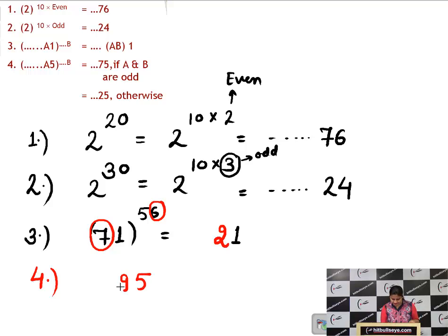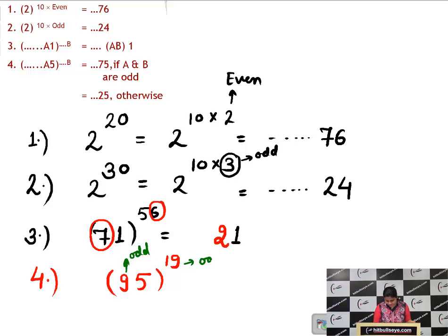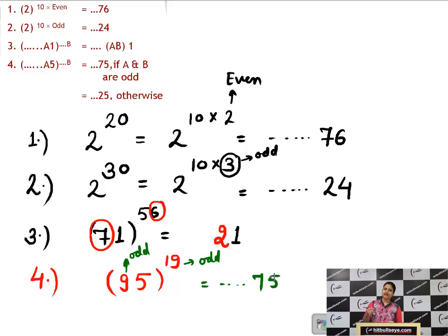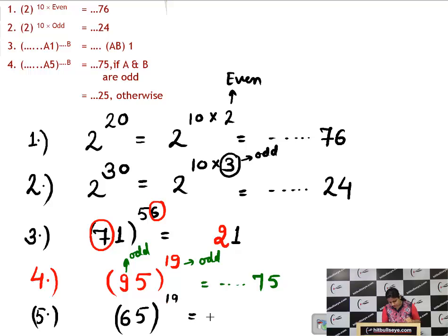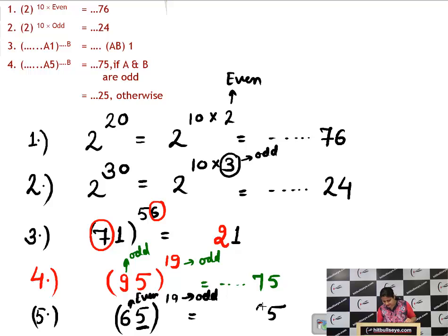Shortcut 4: if a number ends in 5, check the digit before 5 and the power. For 95^19, the digit before 5 is 9 (odd) and the power is 19 (odd) — both odd — so the answer ends in 75. For 65^19, the digit before 5 is 6 (even) and the power is odd — this falls in the otherwise category — so the answer ends in 25.